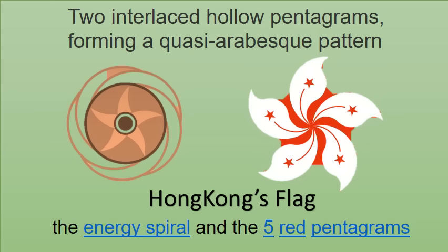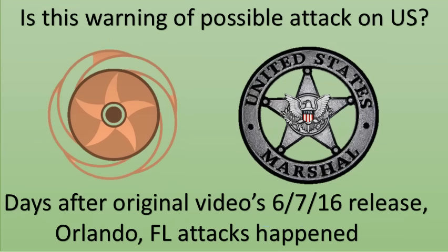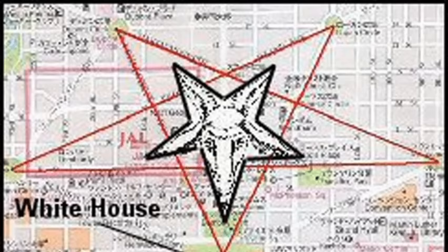Or could this be the symbol of a U.S. Marshal? See, there is a circle inside the five-point star. And when I searched, I found this map with a five-point star pointing to the White House. Will there be any attacks on the White House? Don't forget, there is a target in the center. So could this be a warning?